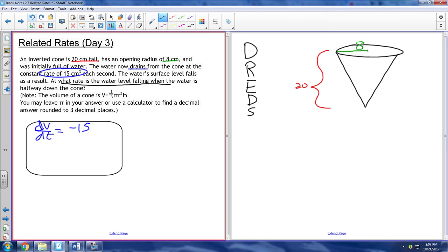So next we want to know at what rate is the water level falling. So we probably should call the water level height, and we know that height is changing. So we should rewrite this black underline thing into dh dt is question mark. That's what we're looking for. And we want to know when the water is halfway down the cone, which is pretty straightforward because the cone is 20 centimeters tall. So halfway down would be when the height is 10.